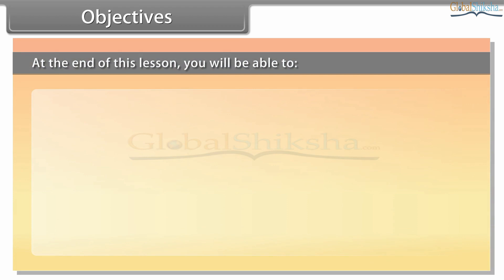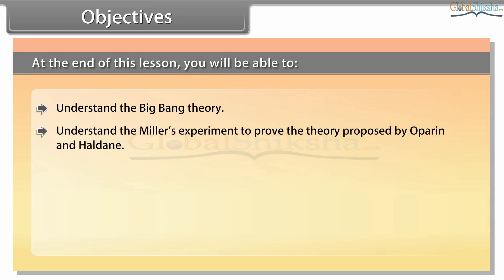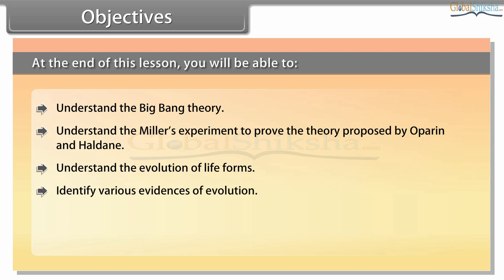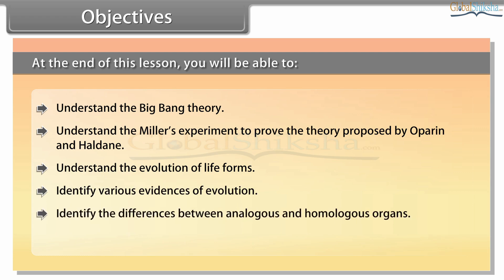Objectives: At the end of this lesson you will be able to understand the Big Bang Theory, understand Miller's experiment to prove the theory proposed by Oparin and Haldane, understand the evolution of life forms, identify various evidences of evolution, identify the differences between analogous and homologous organs, and understand the concept of adaptive radiation.